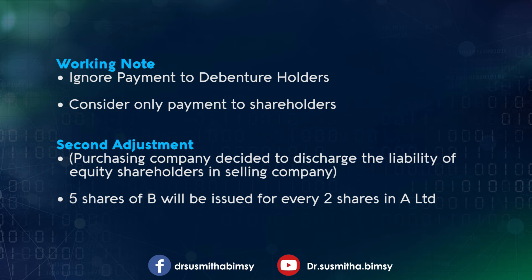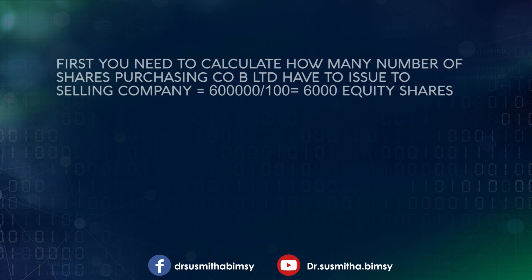Now see the second and third adjustments. The purchasing company agrees to issue five equity shares for every two equity shares of A Limited. Third, to pay ₹20 per share in cash and to issue six preference shares of ₹100 each in lieu of every five preference shares held in A Limited. Market value is given as ₹125, which we have to take into consideration. First, calculate how many shares the purchasing company is going to issue — for every two shares in the selling company, the purchasing company will issue five shares.